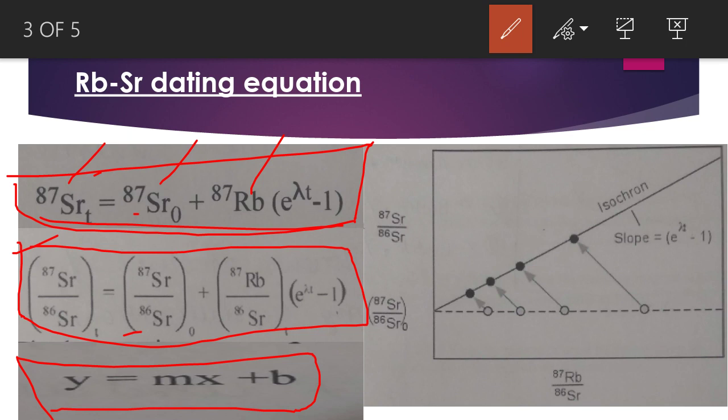By this equation, because it belongs to a line, we can prepare a line. In this diagram you can see there is a line which is known as isochron.